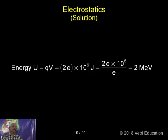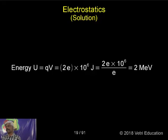What is mega? The e gets cancelled — mega means million, so the answer is 10 power 6, which gives 2 mega electron volt.